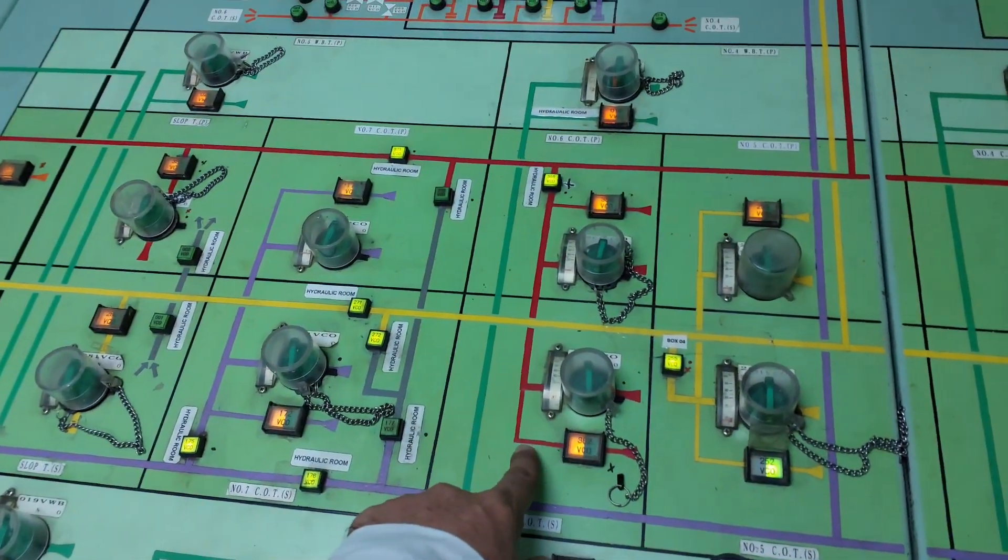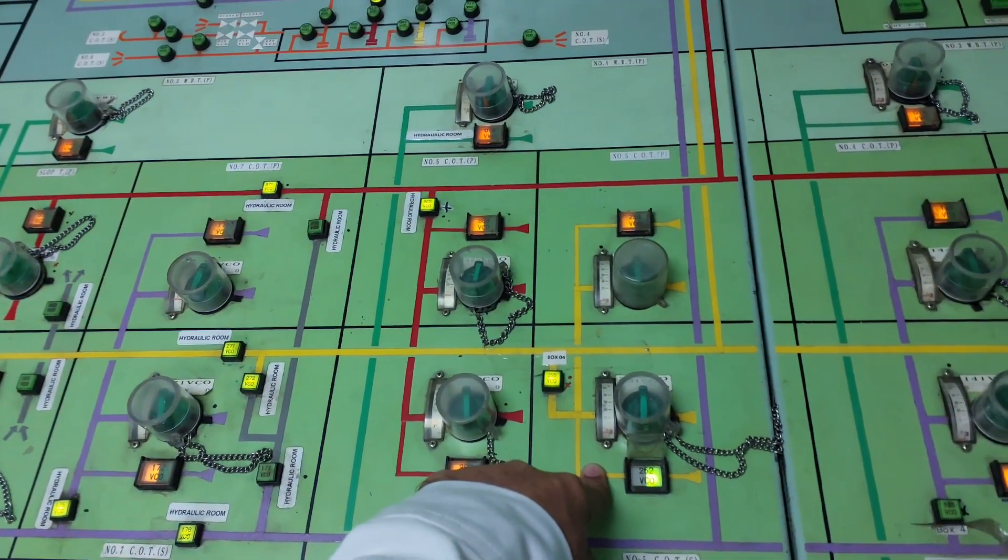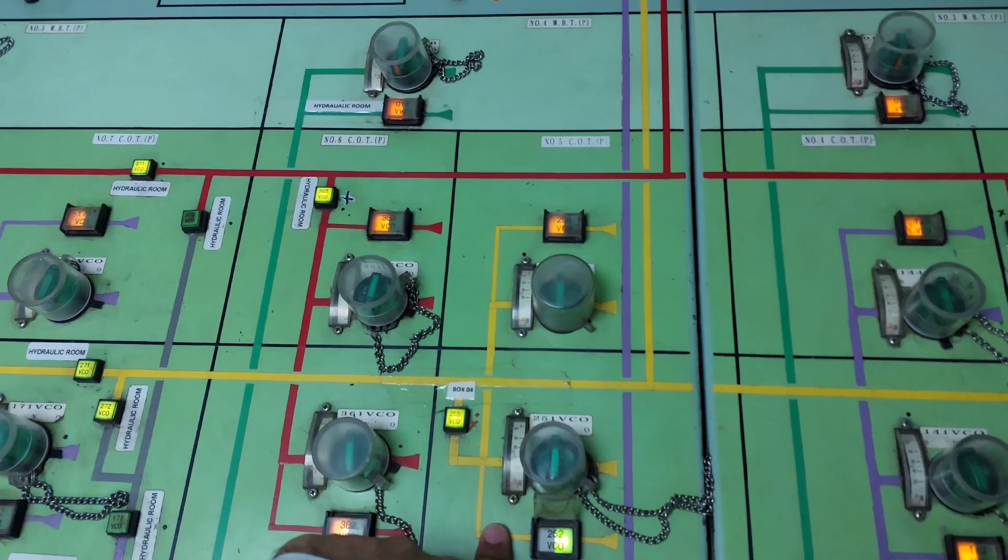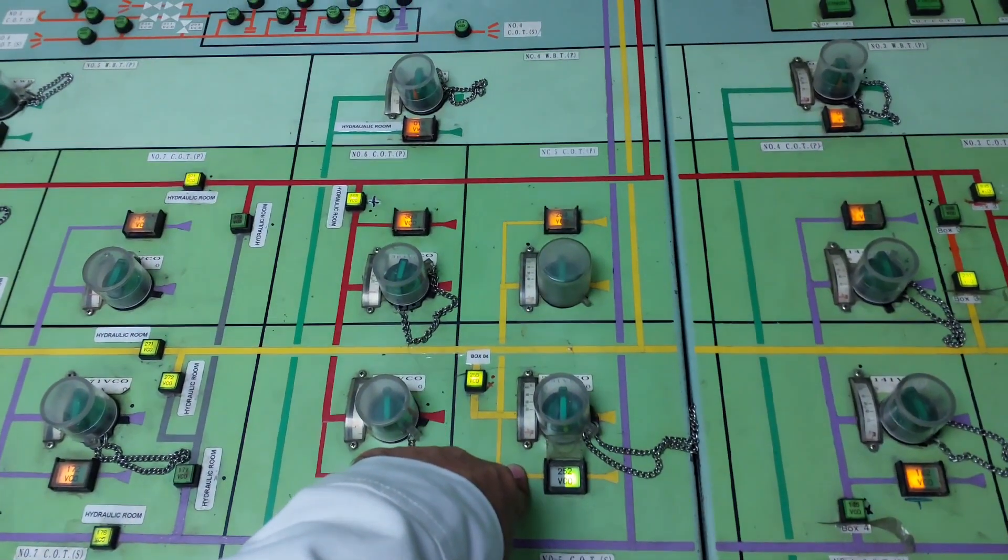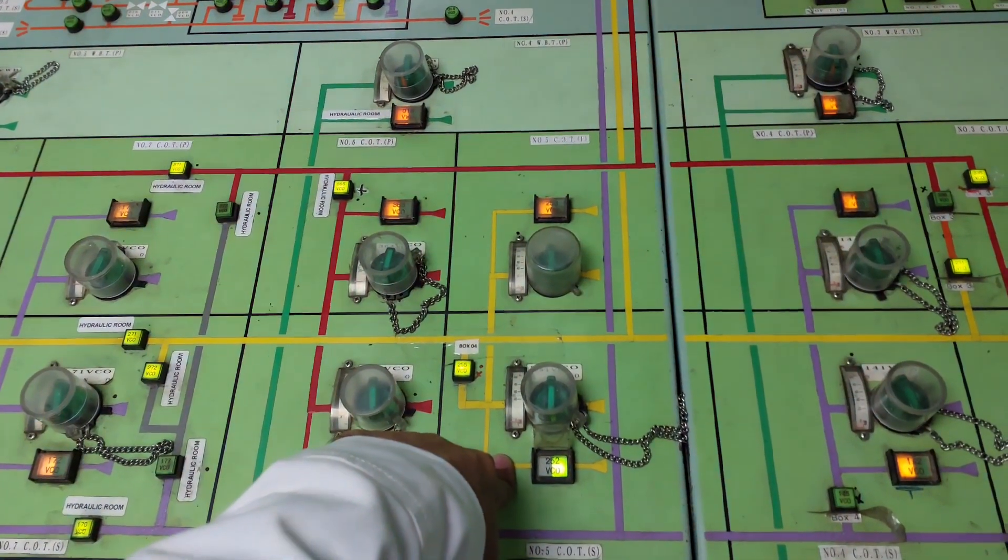So after we have a good vacuum, we can open any tank in this line and the eductor will do its job. So I have opened this stripping valve of five starboard. So with the good vacuum, eductor is doing good stripping.